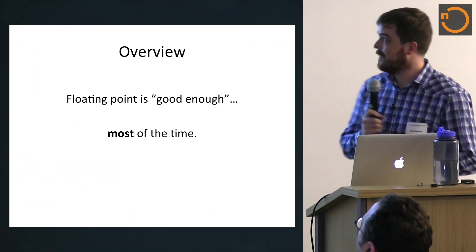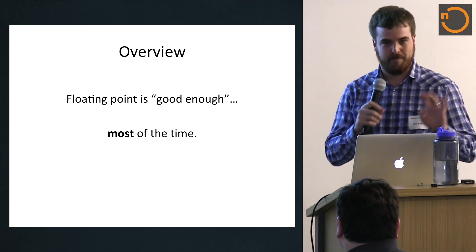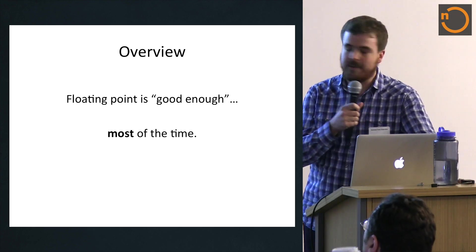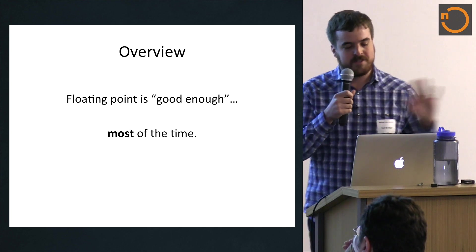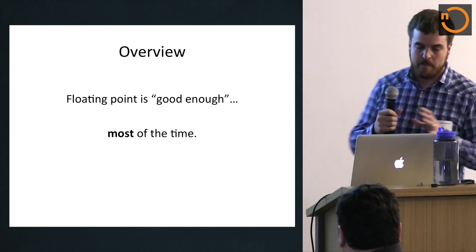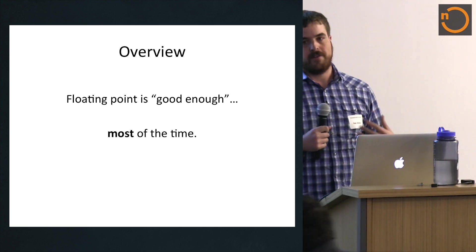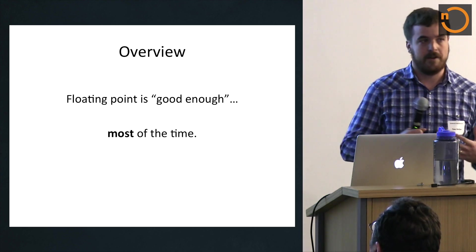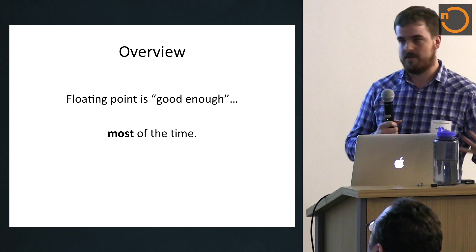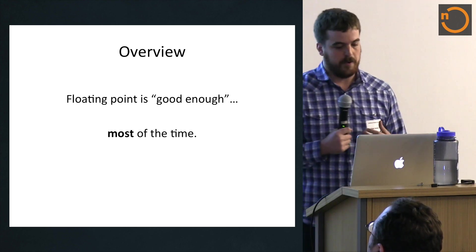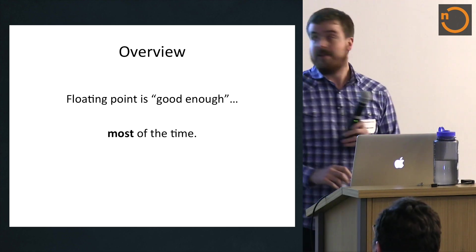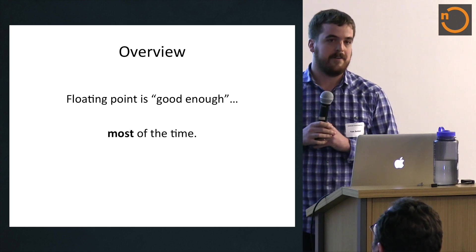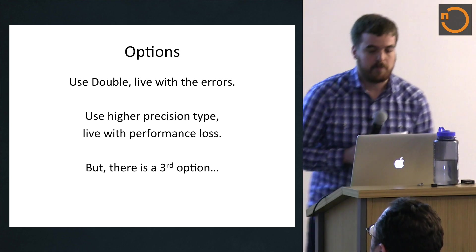So the main thing here is you're sitting there and you're implementing some numeric algorithm, and you want to use floating point because it's fast. More importantly, floating point generally is good enough most of the time. I'm sure whenever you guys are doing it, use double and things usually work. The problem is what happens when it doesn't and you get errors. You really have three options.